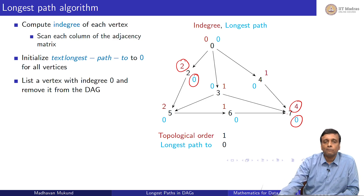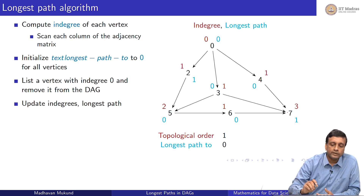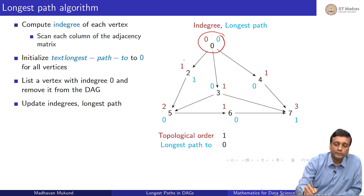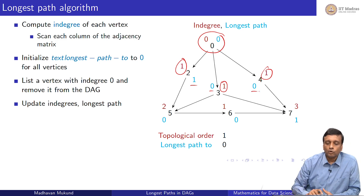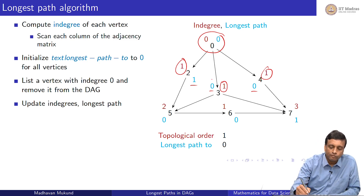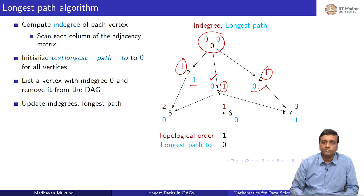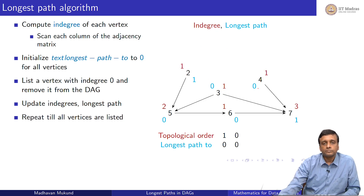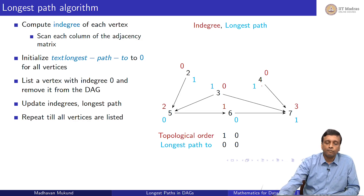Next we pick vertex 0. When we do vertex 0, we update the in-degrees and also update the longest paths. For vertex 2, it already believes its longest path is 1, and the new information from 0 gives 1 plus 0 = 1, so nothing changes. But for vertices 3 and 4, where the longest path was previously believed to be 0, we now update to 1 plus 0 = 1. So we make all their in-degrees reduce and update the longest path for 3 and 4.